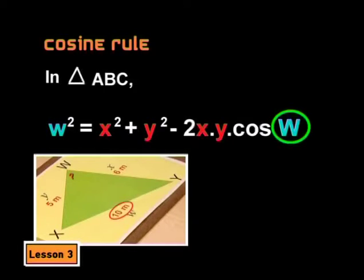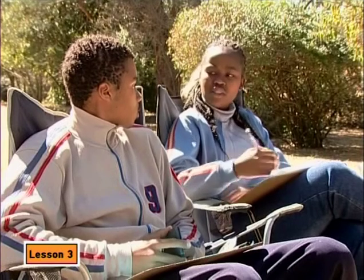But we want to find angle W. And that's on the other side of the formula. Do we need to get W on its own first? Again, an excellent question. You could change the subject of the formula to get cos of W on its own. But you can still work with the formula as it is. We'll first put in all the values and then we'll see what to do.